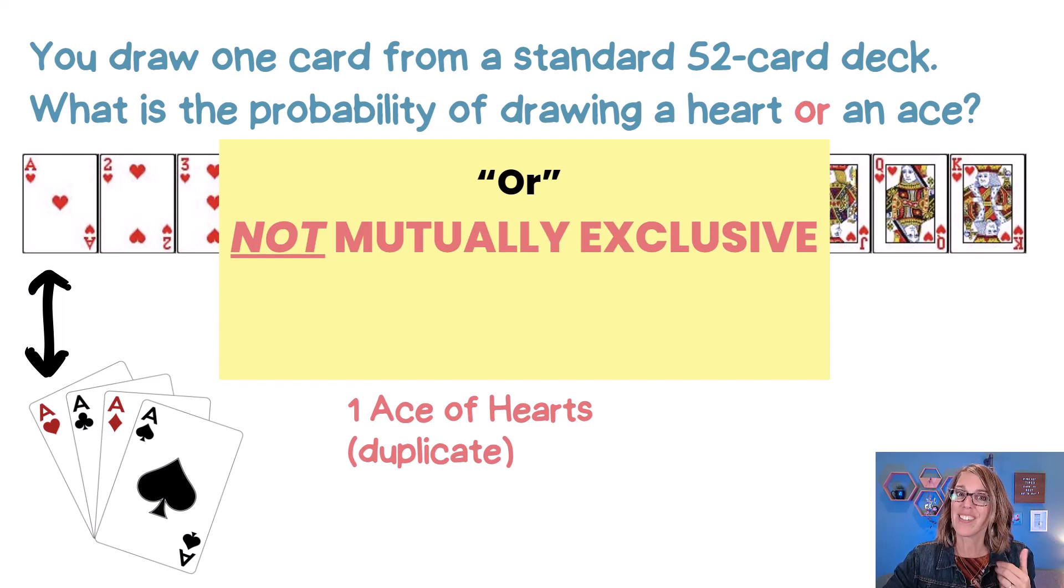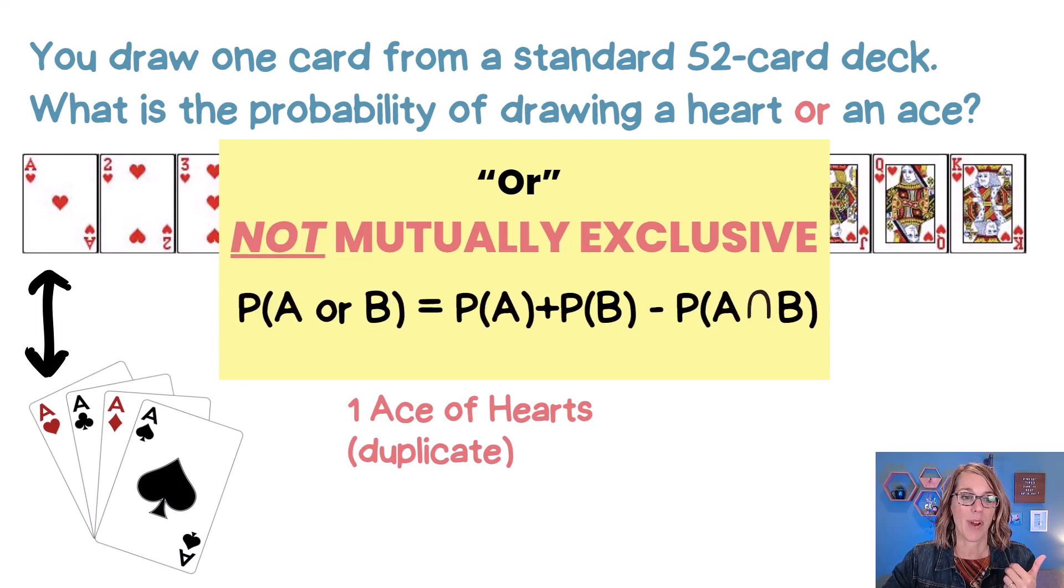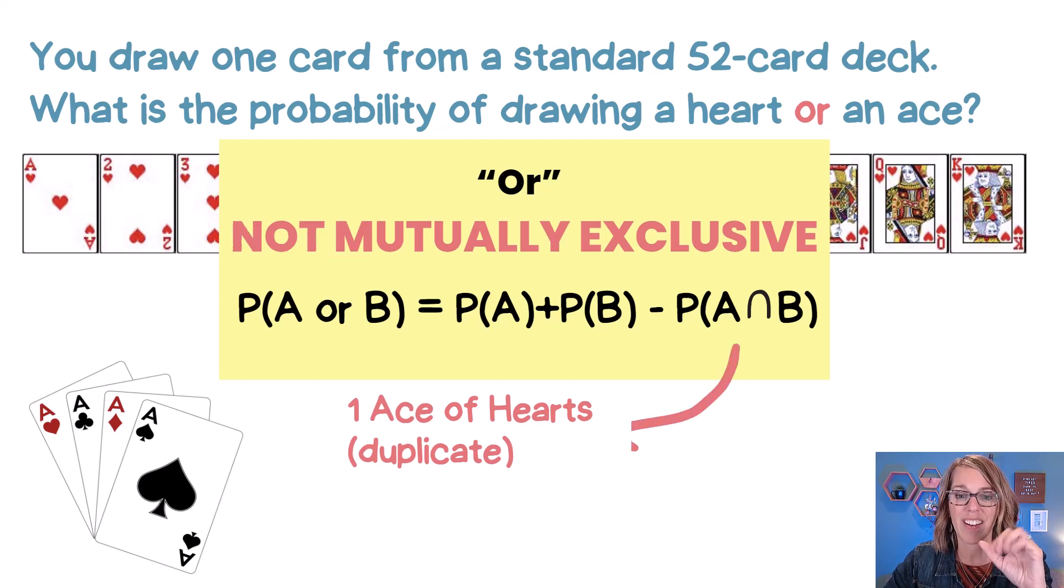So my formula looks a little bit different. The probability of A or B. It's still the probability of A plus the probability of B, but what we're subtracting there is actually the duplicate or the duplicates, and that's the probability of A intersect B, or the probability of getting both at the same time.